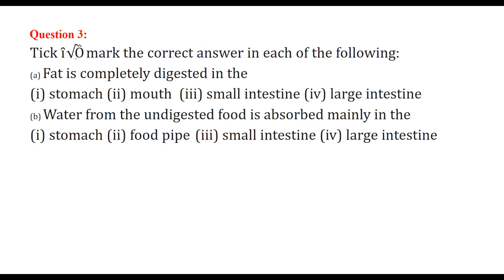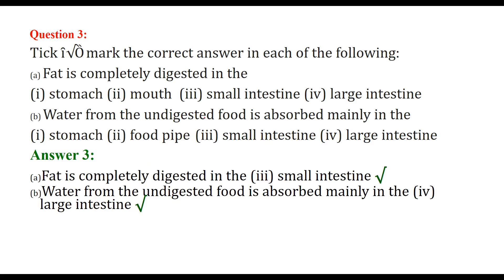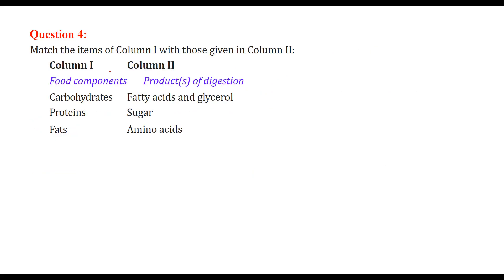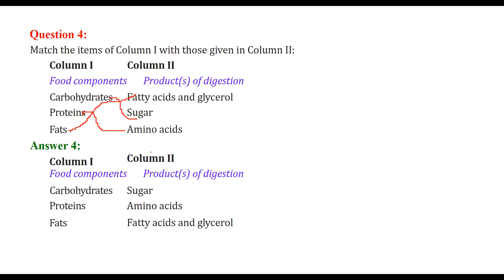Tick mark the correct answer in each of the following. Fat is completely digested in, where? The answer is small intestine. Water from the undigested food is absorbed mainly in the large intestine. Match the following: carbohydrates goes with sugar, proteins go with amino acids, and fats goes with fatty acids and glycerol.